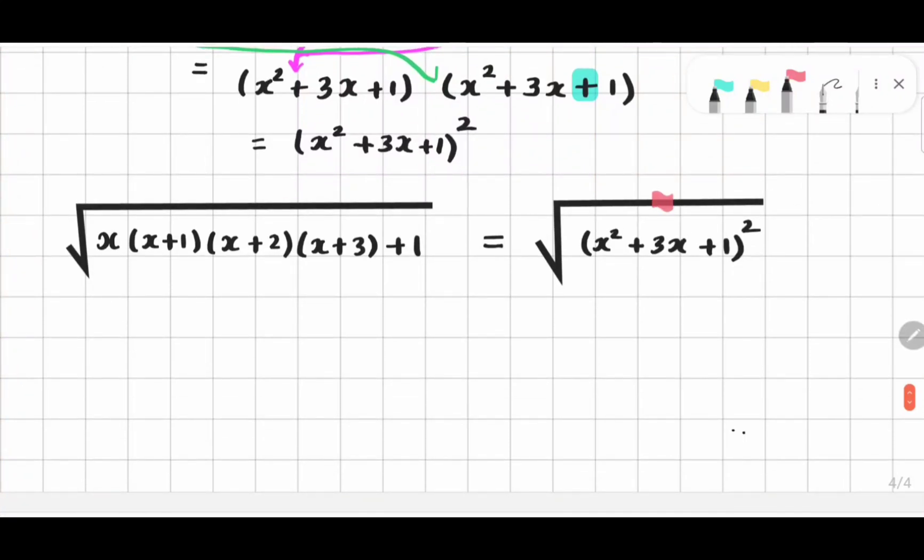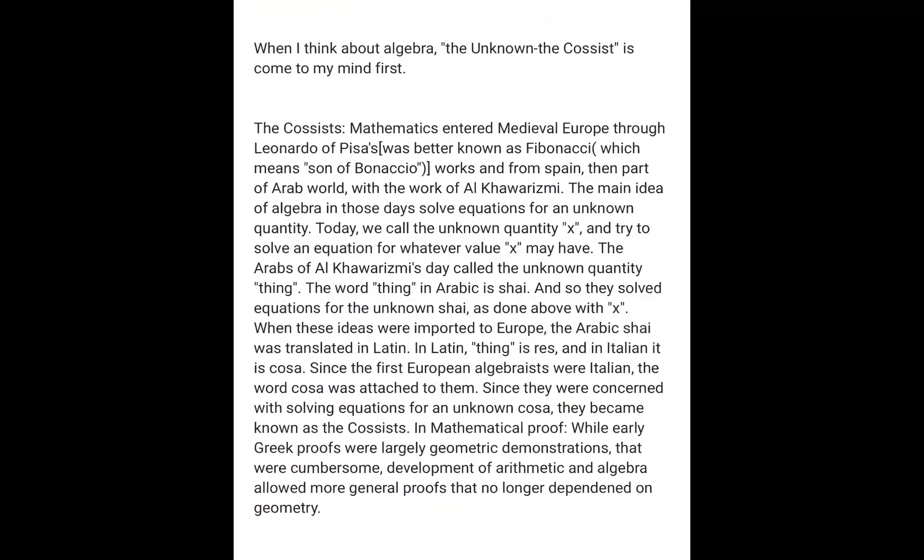Here we can cancel out the square root and the whole square. Because both are inverses to each other. By doing so, we get x square plus 3x plus 1. If we plug in 300 in place of x as we took in the beginning, we have 300 square plus 3 times 300 and 1. So the result is 90,901.